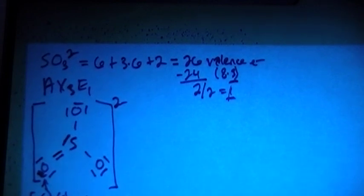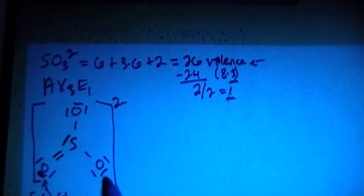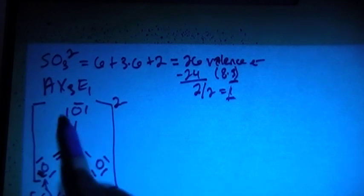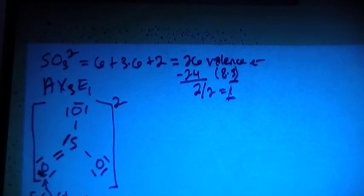And now we can do the formal charges on oxygen 2 and 3, which are just going to be these other two oxygens that have single bonds. And that's going to be 6 valence, minus 1 bond for each, minus 1, 2, 3, 4, 5, 6 non-bonding, which is a negative 1 for each of those.